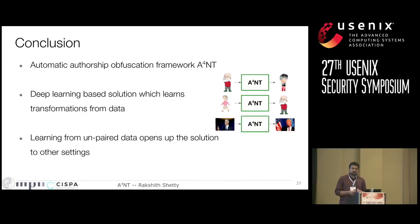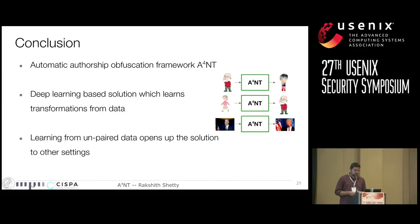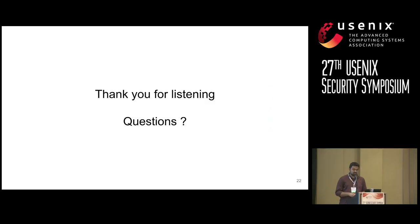In conclusion, we presented a new authorship obfuscation framework called ANT. It uses deep learning techniques to learn to perform obfuscation directly from data, which is a departure from prior work. Because of this, we can easily apply it to different settings without much re-engineering — we demonstrated this on age, gender, and identity obfuscation. More importantly, it learns using only unpaired data: you only need lots of text written by adults and teenagers, but not necessarily the same piece of text. We believe this makes the method more generic and applicable to other settings where only unpaired data is available. Thank you for listening, I'm open to questions.